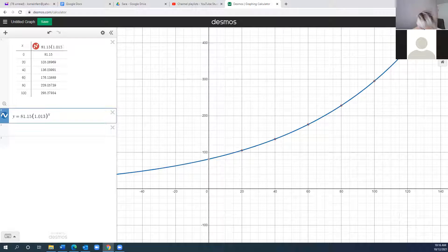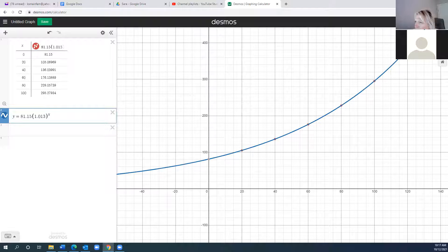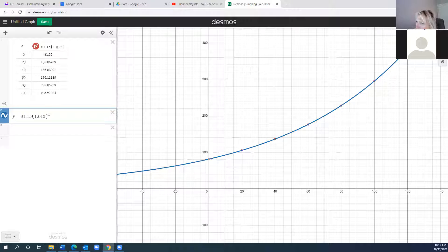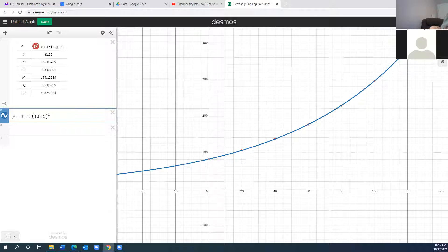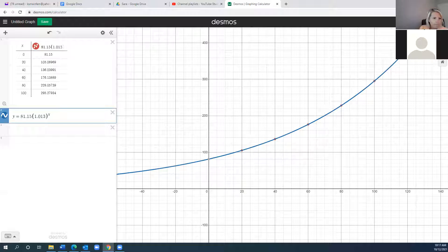I'm going to type it again, so y equals 81.15 times 1.013 to the x. So my blue one is the one that I can grab and I can use this slider with my left mouse. So I'm going to fill in my table with information from the table that Desmos generated: 105.07, 136.04, 176.14, 228.06, and 295.28. And then we have the graph of course.